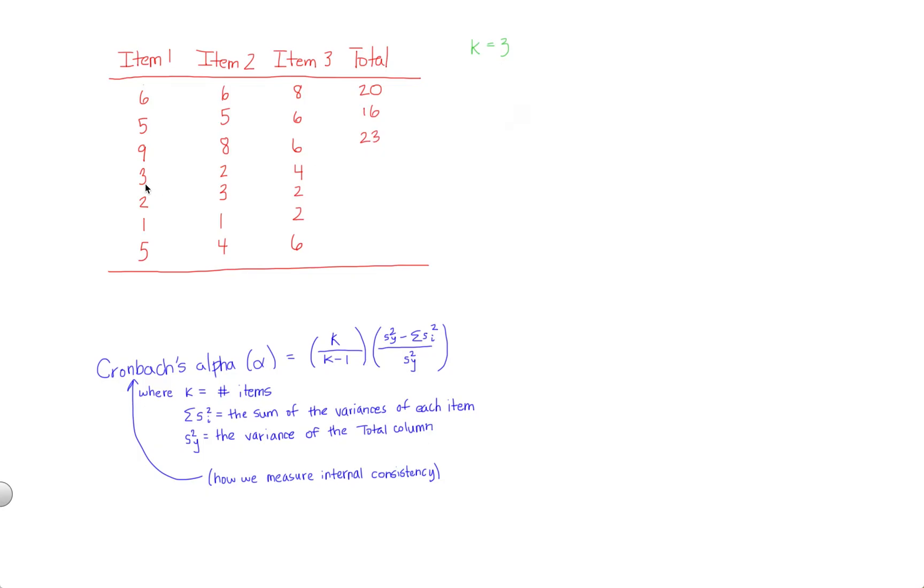For participant number four, three plus two plus four comes out to nine. And we're almost there. A couple more. Two plus three plus two is seven. One plus one plus two is four. And finally, five plus four plus six comes out to 15.